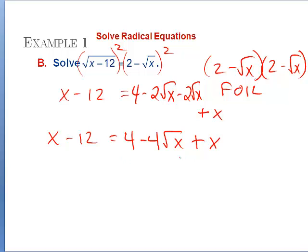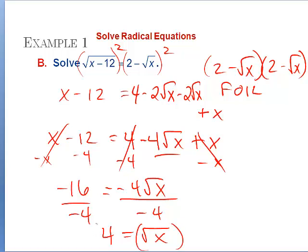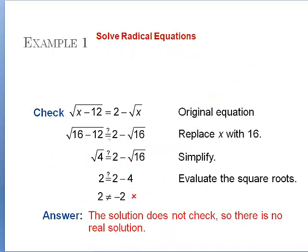Collecting like terms, I now isolate the remaining radical. I subtract 4 from each side and subtract x. The x's cancel, leaving −16 = −4√x. Dividing by −4 gives √x = 4. Squaring both sides gives x = 16. Checking: substituting x = 16 in both places, the left-hand side gives √(16−12) = √4 = 2, and the right-hand side gives 2 − √16 = 2 − 4 = −2. Since 2 ≠ −2, it does not check, so there is no real solution — meaning there's no intersection between those two graphs.